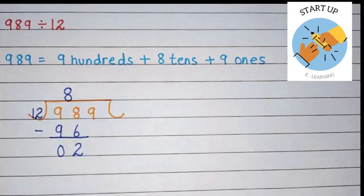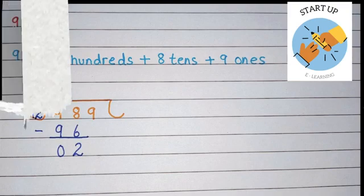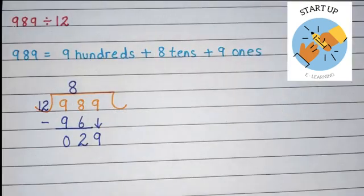Now we will take the next digit of the dividend because 2 is smaller than 12. So we will bring the next number 9 down.